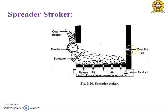The secondary air is supplied through the holes of the grate to create turbulence and supply oxygen for thorough combustion of coal, supplied to the nozzle directly into the zone of ignition. Unburned coal and ash are deposited on the grate and it is removed periodically. Spreader stoker can burn any type of coal.